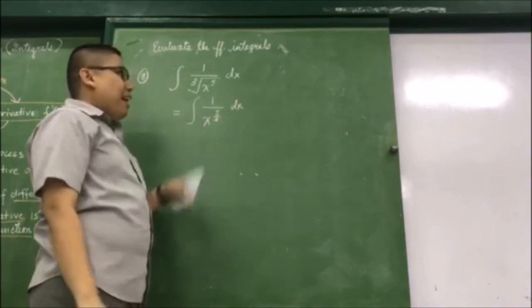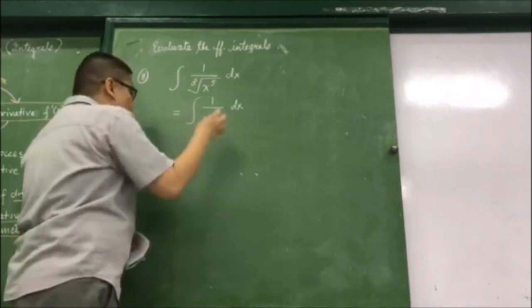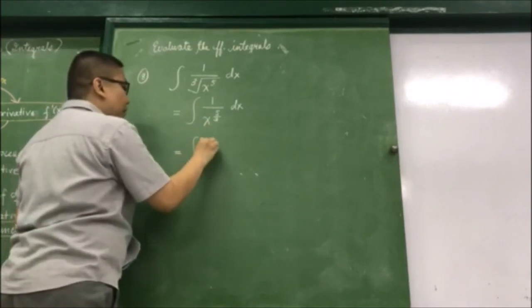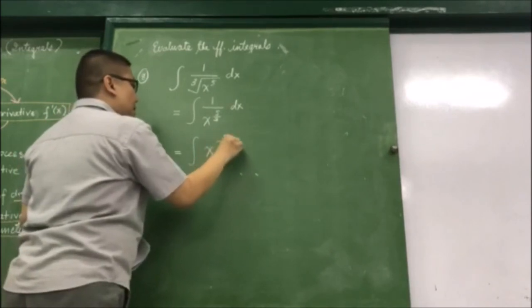When I direct the formula on how to do this, what you do is write this again and move the integral of x raised to negative pi thirds dx.